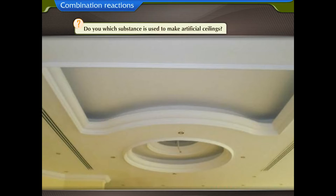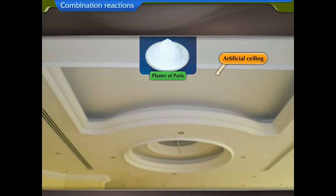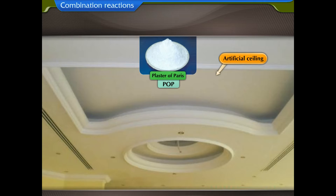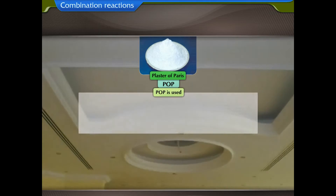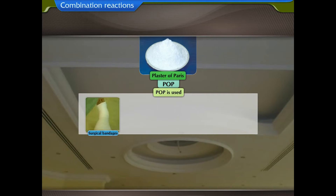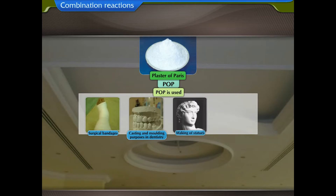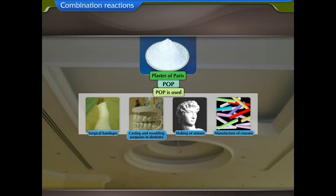Do you know which substance is used to make artificial ceilings? Plaster of Paris, commonly known as POP, is used in making artificial ceilings. It is also used to make surgical bandages, in casting and moulding purposes in dentistry, in the making of statues, manufacture of crayons, etc.